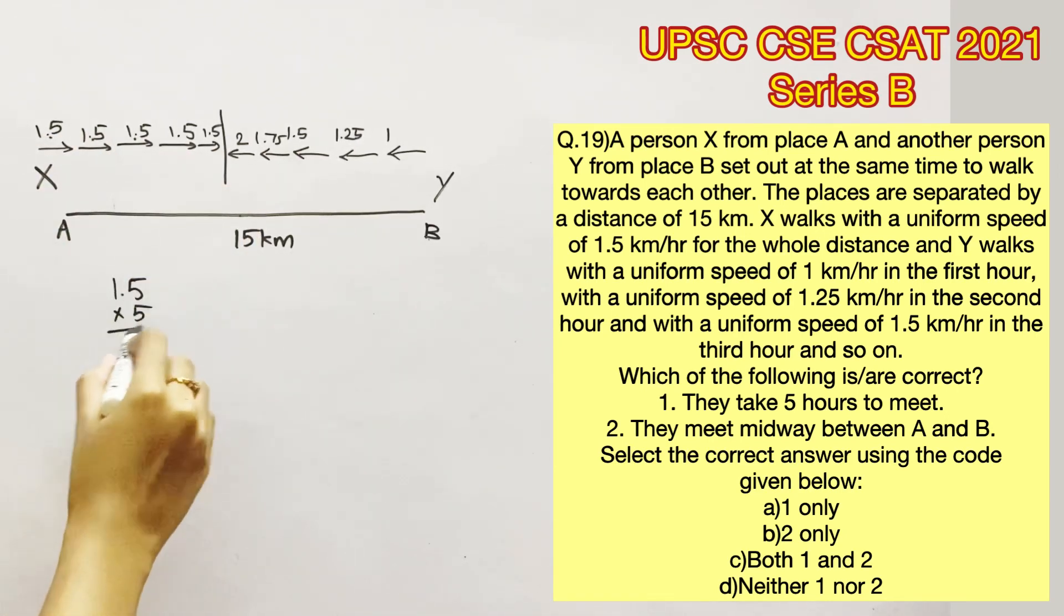So X would have covered 1.5 every hour. So for 5 hours, he would have covered 1.5 into 5, that is 7.5 kilometers.